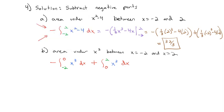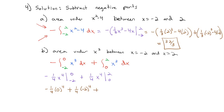Evaluating: negative one fourth x to the fourth from negative 2 to 0, plus one fourth x to the fourth from 0 to 2. Plugging in, we get negative one fourth times 0 to the fourth, plus one fourth times negative 2 to the fourth, plus one fourth times 2 to the fourth, minus one fourth times 0 to the fourth. The zeros drop out, and 2 to the fourth is 16 divided by 4 is 4, giving us 4 plus 4, a total area of 8. Instead of 0, we have the more reasonable area of 8.